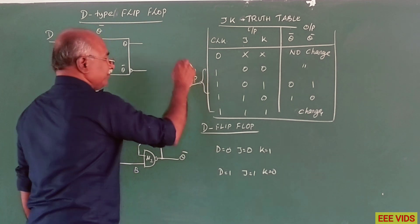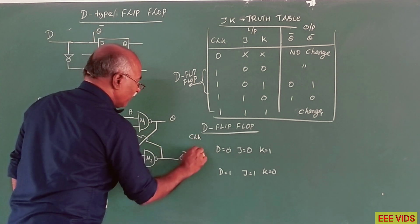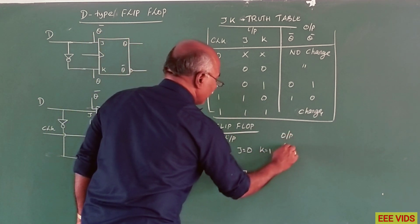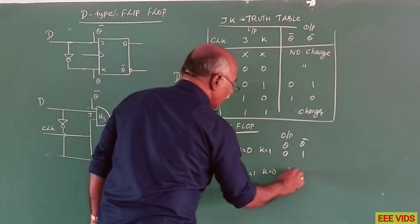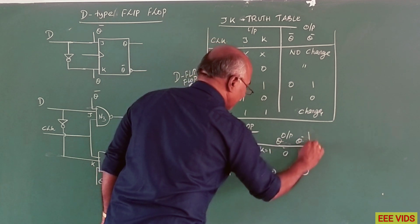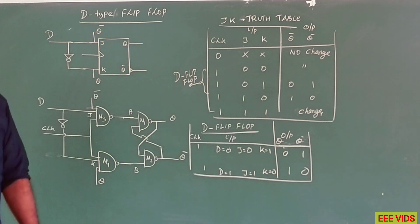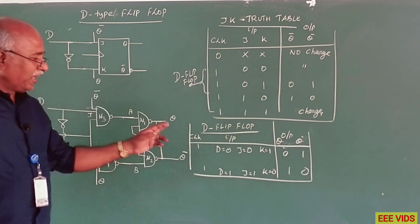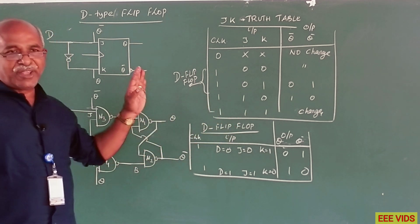D flip-flop truth table: when clock pulse is applied as 1, the output Q and Q bar — D input 0 gives Q=0, Q bar=1; D input 1 gives Q=1, Q bar=0. So D input 1 means J=1, K=0, output Q=1, Q bar=0. D input 0 means J=0, K=1, output Q=0, Q bar=1. This is the D-type flip-flop truth table and circuit diagram.